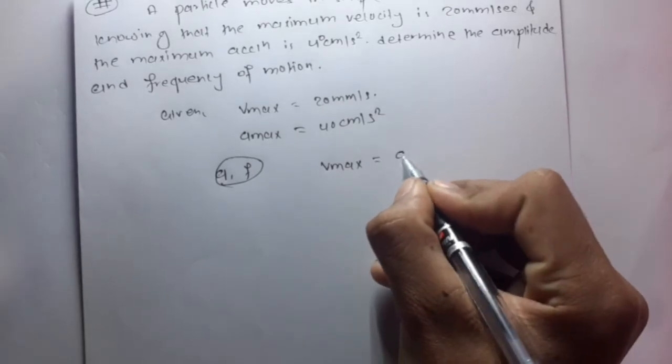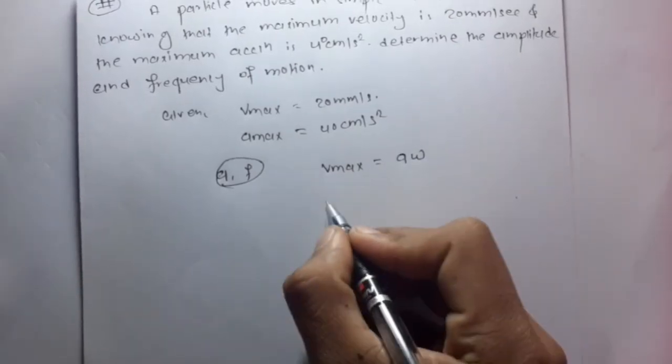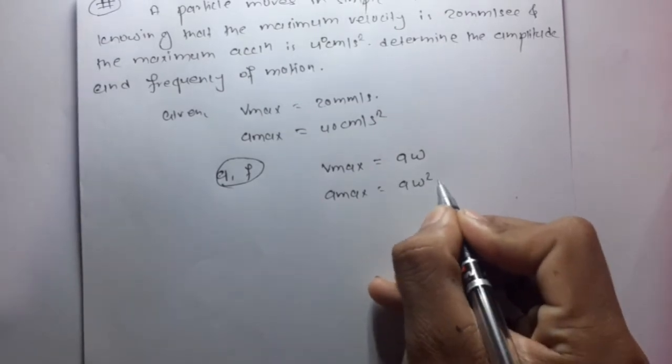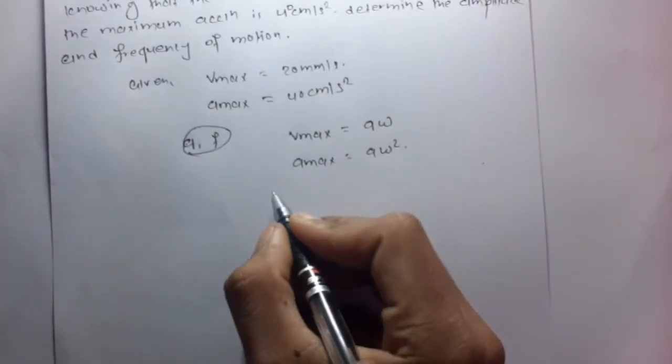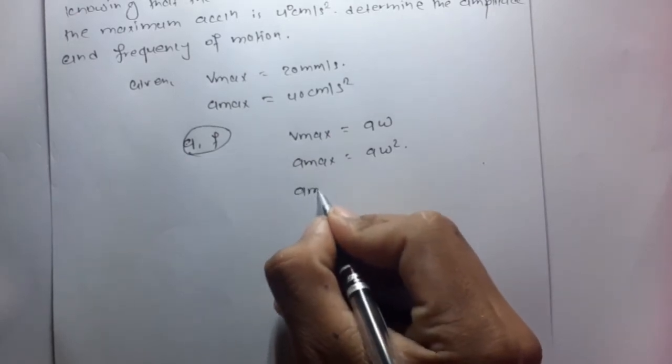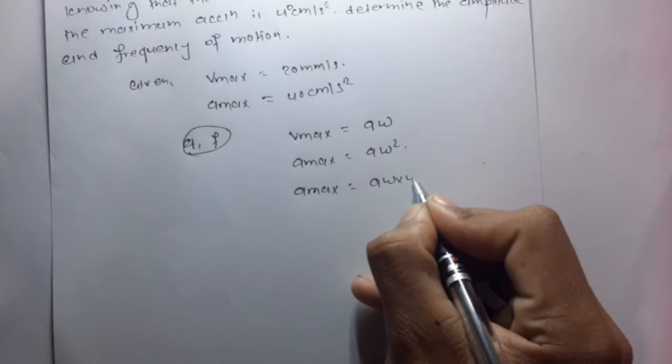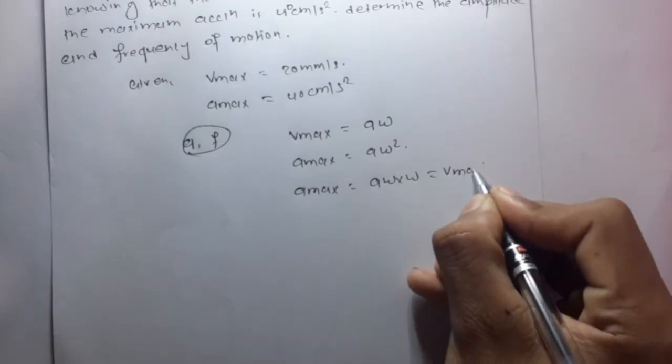is given by A omega, and amax is given by A omega squared. In this case, amax is given by A omega times omega, which equals Vmax times omega.